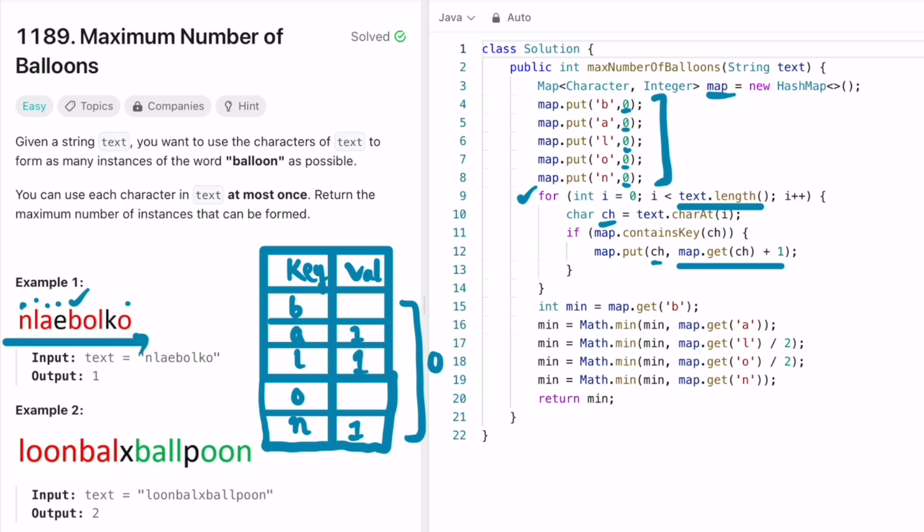So N is appearing once, L is appearing once, A is one, E is one. E is not there inside the map so you don't consider that.